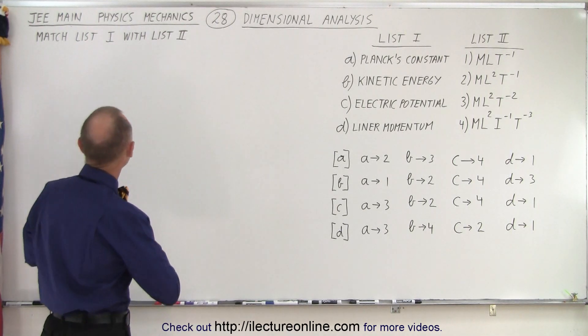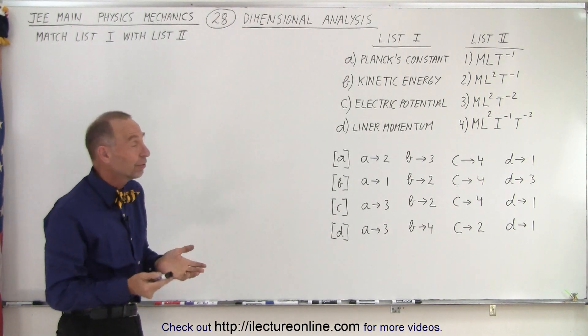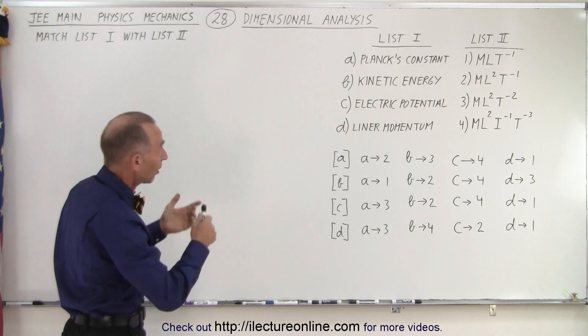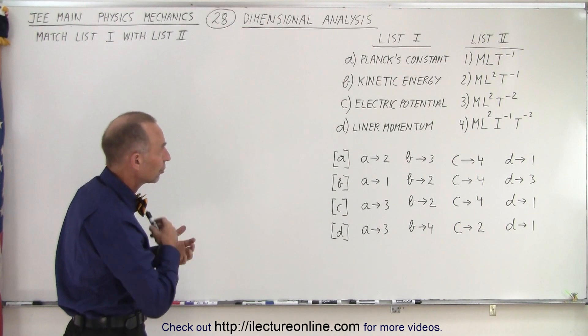So here we have a problem. It says match list 1 with list 2. Seems simple enough, so we have two lists. On the left side, list 1 has Planck's constant, kinetic energy, electrical potential, and linear momentum.